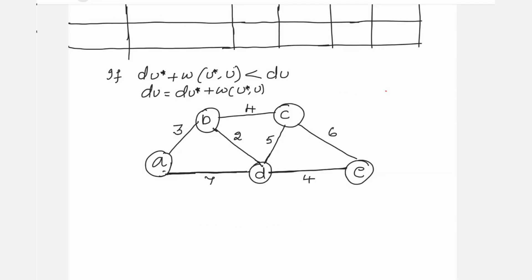The given source vertex is A, and we are going to use Dijkstra's algorithm to find: with what minimum cost A can reach B, with what minimum cost A can reach C, with what minimum cost A can reach D, and with what minimum cost A can reach E. The given source vertex is A.